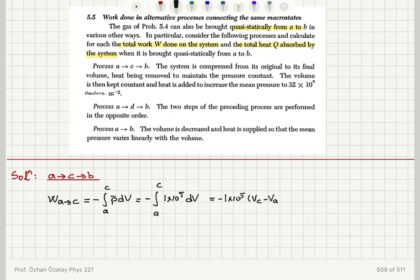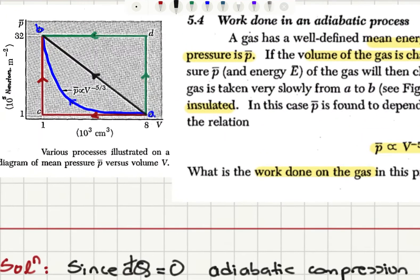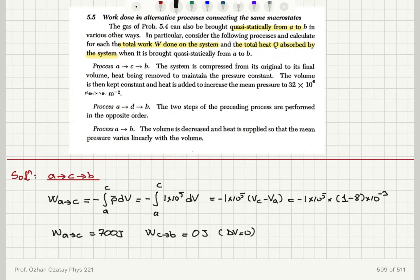Volume at C is 1 times 10 to minus 3 and volume at A is 8 times 10 to minus 3 meter cubed. So the work done from A to C is 700 joules. The work done from C to B equals 0 joules because delta V equals 0 — it's an isovolumetric (constant volume) process. The A-to-C step is isobaric (constant pressure). Therefore the total work done from A to C to B is 0 plus 700 = 700 joules.